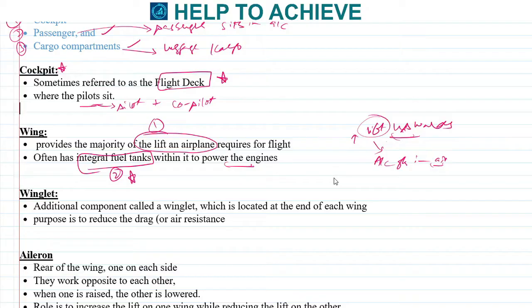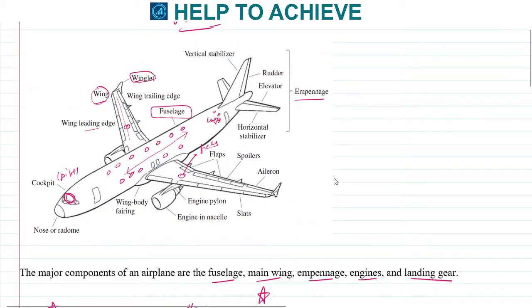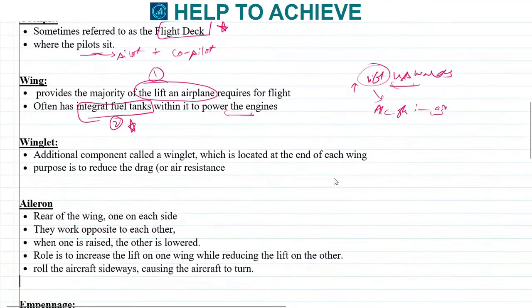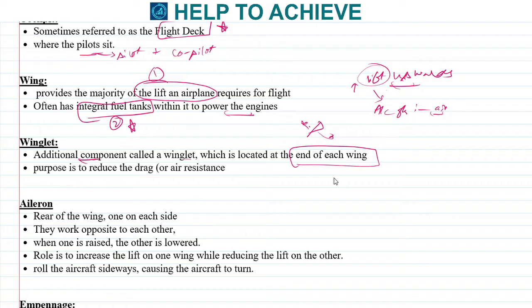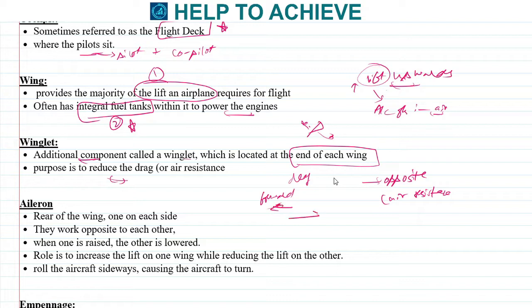There is another component that is part of the wing — at the end of each wing you can see a small triangle shape known as a winglet. Winglets are located on either side of the aircraft, and their important function is to reduce drag. Drag is the air resistance acting in the opposite direction to the aircraft's motion. The lesser the drag, the faster the aircraft will move.